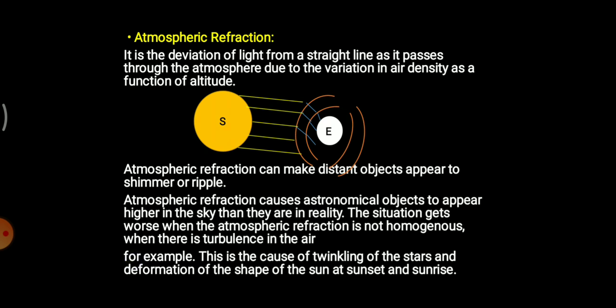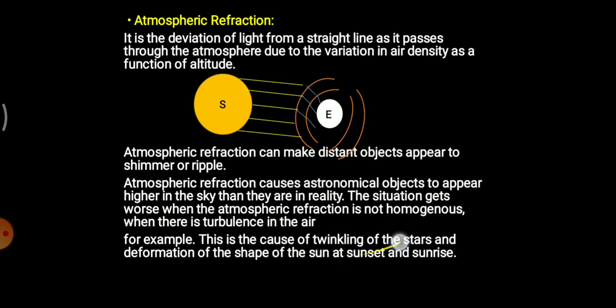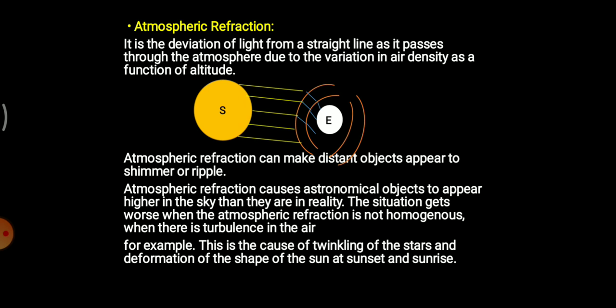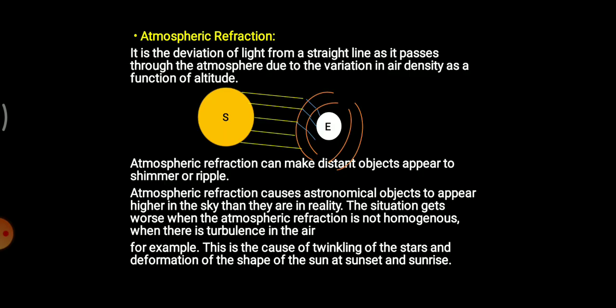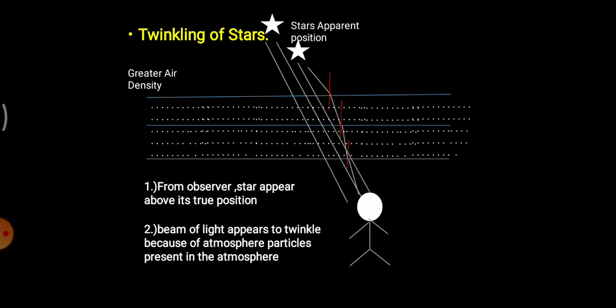Certain examples of atmospheric refraction are: twinkling of stars, and deformation of the shapes of the sun at sunset and sunrise. You might have seen the twinkling of stars, but in reality stars do not twinkle — it is the human observer who has a perception that the star is twinkling, because of particles at different layers causing the light to shimmer. Another example is deformation of shapes: during sunrise and sunset, the sun is not exactly circular or spherical in shape but appears somewhat oval, because of atmospheric refraction.